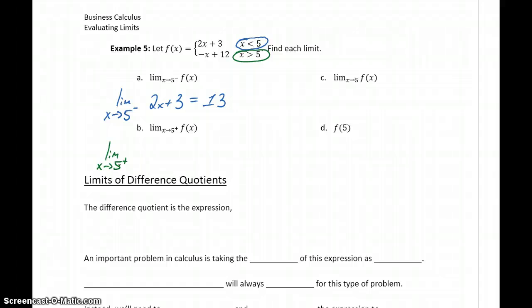This will be taking the limit as X approaches 5 from the right hand side of negative X plus 12. Again, a polynomial function so we can plug in 5 to get negative 5 plus 12, which gives us a limit of 7.